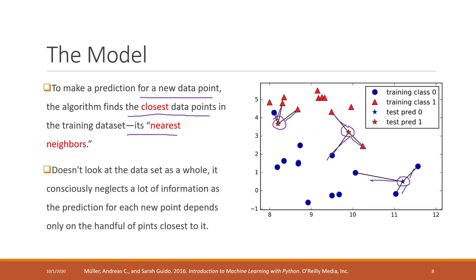Depending on the closest neighbors, we predict either the class or the value for each new data point. For classification, if for a given point two neighbors are red and one neighbor is blue, we predict that point as red — we give it the majority class of its neighbors. Similarly, if two neighbors are red and one is blue, the new sample is predicted as red. If all three neighbors are blue, the point is predicted as blue.